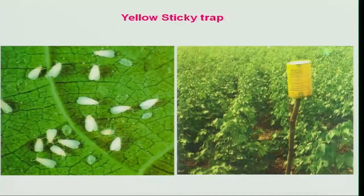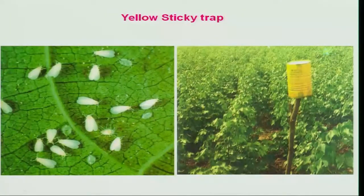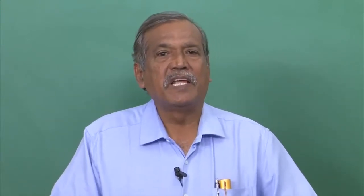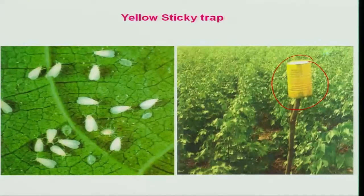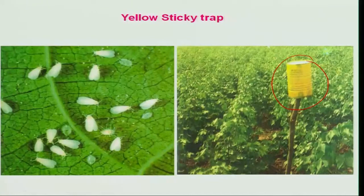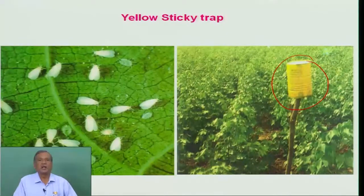Similarly, cotton whitefly — another important pest that caused major economic damage in North India — is also attracted to yellow color. A simple trap, even an insecticide container after use, can be pasted with yellow color and smeared with a greasy material; again, castor oil can be one of the cheapest options. Placement is most important — it should be placed above the crop canopy so the yellow color is visible to adult whiteflies. Both male and female are attracted to this yellow color, and they come and sit on the trap where, because of the greasy material, they will be trapped and killed. This is one simple device to reduce insect populations in a given ecosystem.